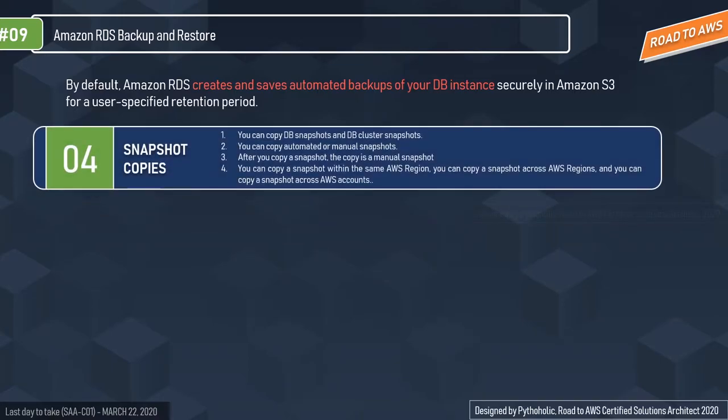With snapshot copies, Amazon RDS allows you to copy DB snapshots and DB cluster snapshots. You can copy automated or manual snapshots, and after copying, the copy becomes a manual snapshot itself. You can copy a snapshot within the same AWS region, across AWS regions, or across AWS accounts.